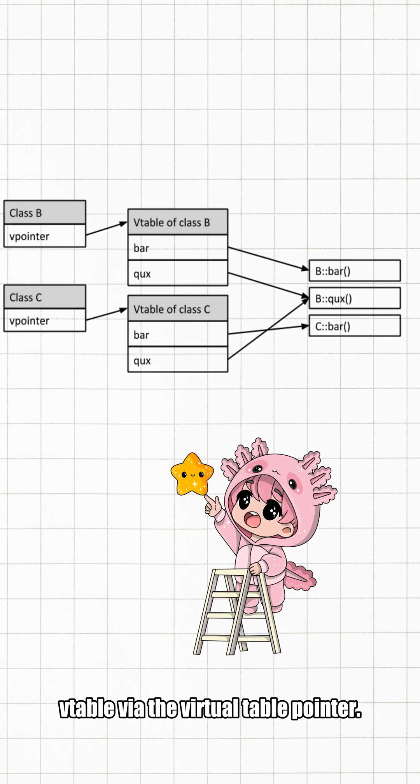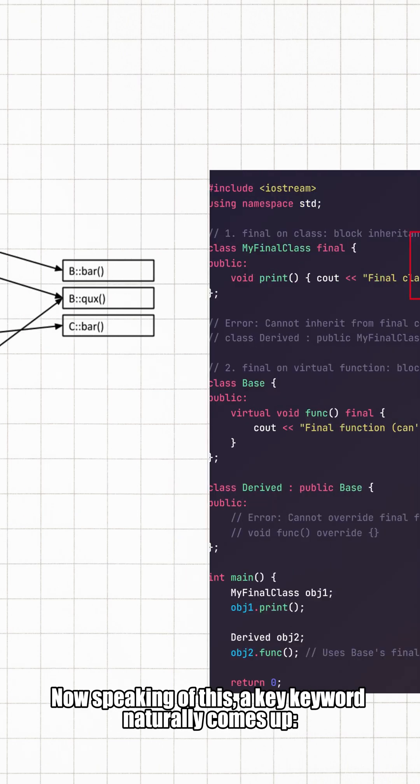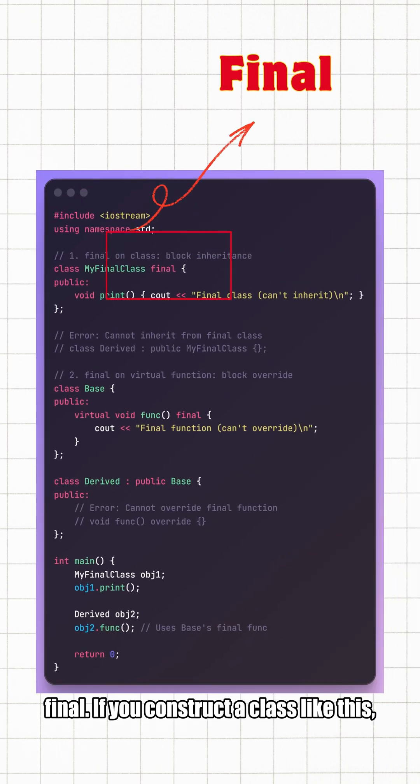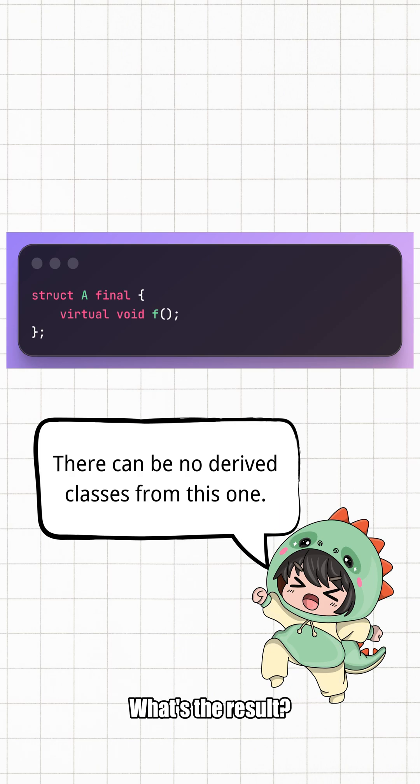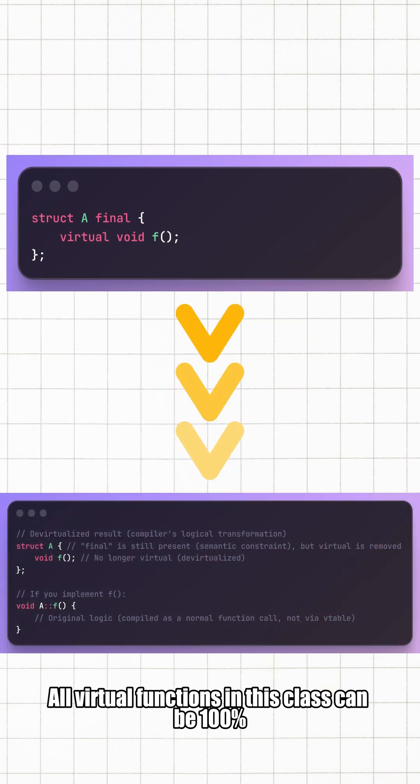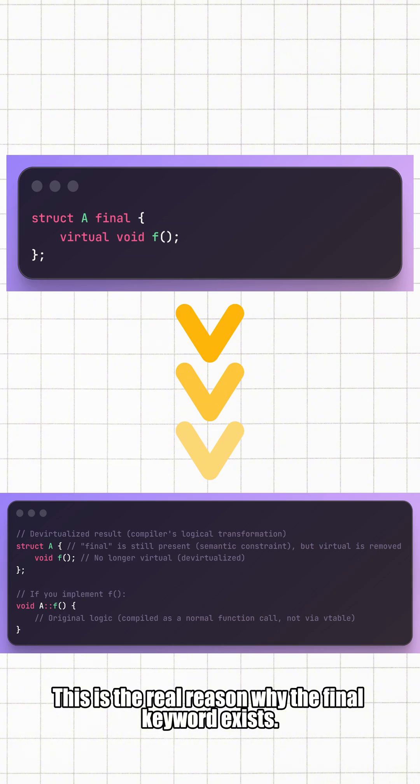Now speaking of this, a key keyword naturally comes up: final. If you construct a class like this, you are clearly telling the compiler there can be no derived classes from this one. What's the result? All virtual functions in this class can be 100% devirtualized. This is the real reason why the final keyword exists.